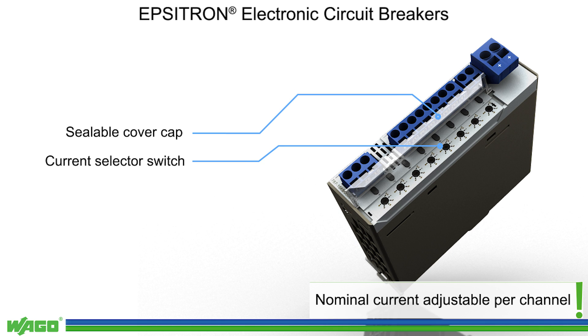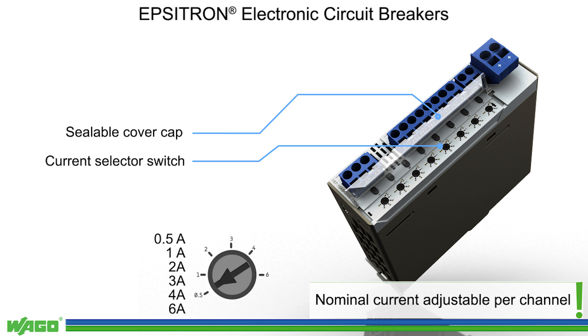All models feature a six-position current selector switch per channel for setting the respective trip current. The following variants are available.